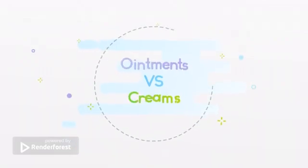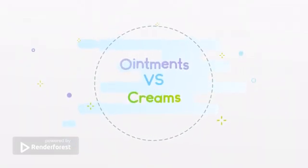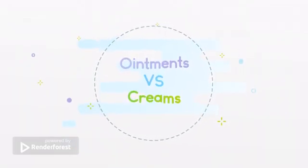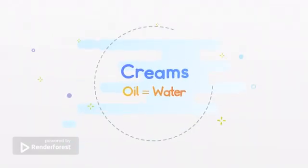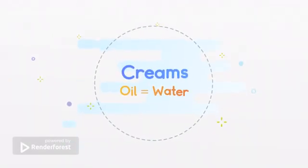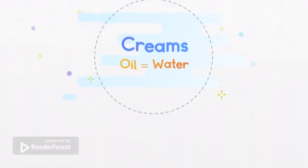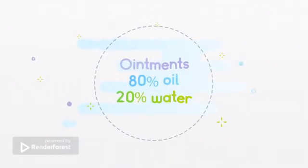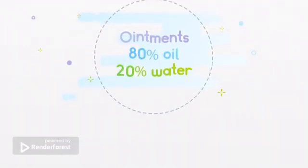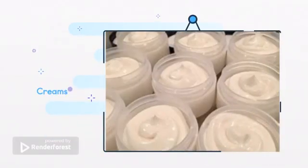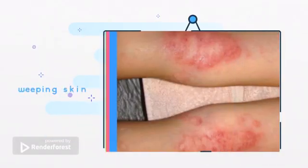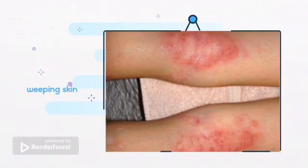One of the main differences between ointments and creams is how much oil and water they contain. Creams generally contain equal parts oil and water, while ointments typically contain 80% oil and just 20% water. Creams can be used on all areas of the body, including the face and genitals.